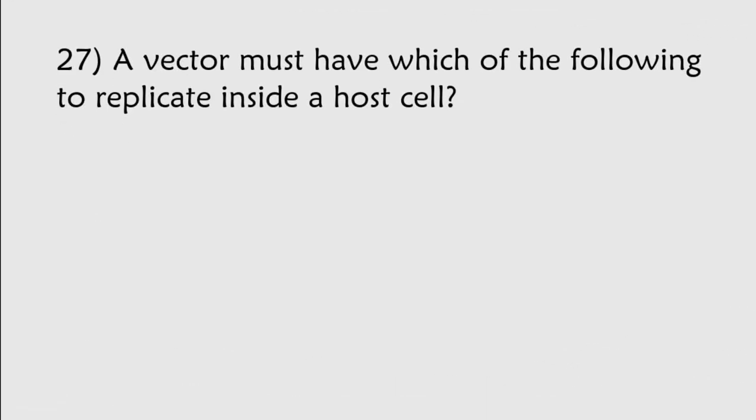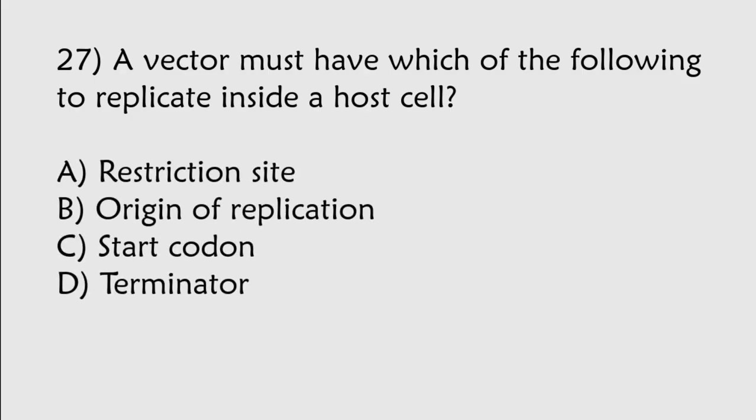A vector must have which of the following to replicate inside a host cell? Restriction site, origin of replication, start codon, terminator. Correct answer is Option B, origin of replication.